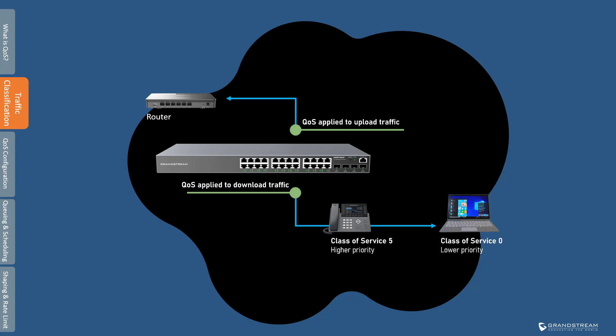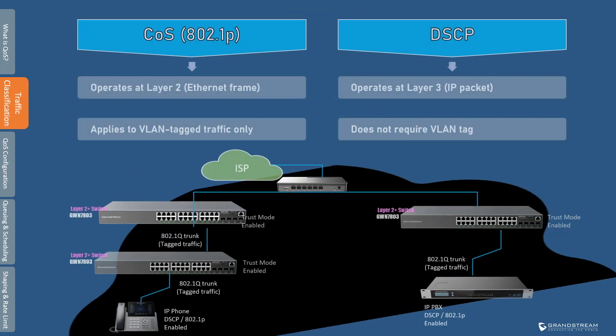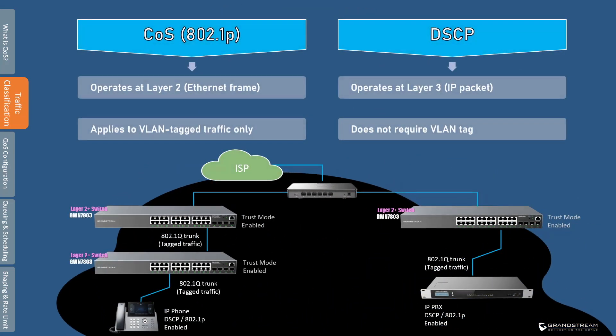It is important to keep in mind that a QoS policy affects traffic priorities at the outbound port. To better understand how QoS operates, it is important to know the methods used to classify network traffic. In this video, we will focus on CoS and DSCP.